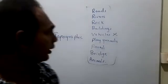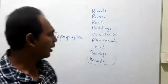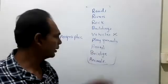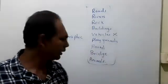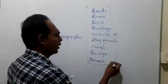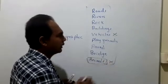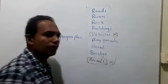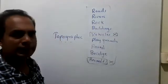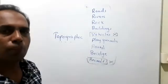Vehicles are not permanent — they are moving. Playgrounds are permanent. Forests are permanent. Animals are not permanent — they are moving. Therefore, all movable and non-permanent things are not topographic features. All permanent things in the environment are topographic features.